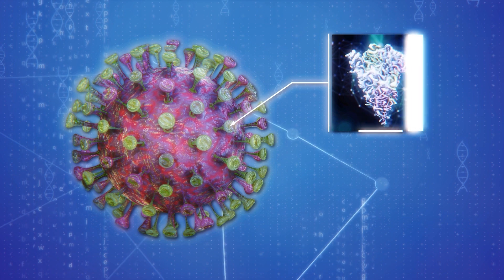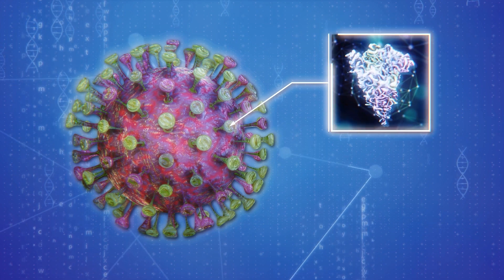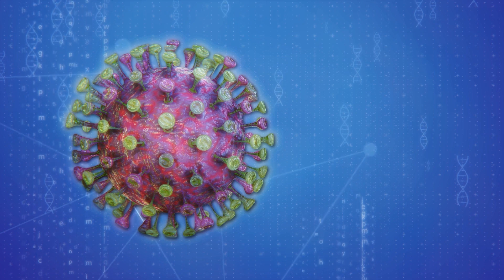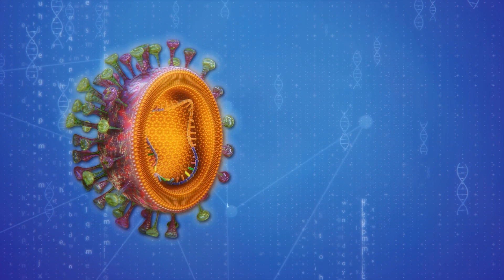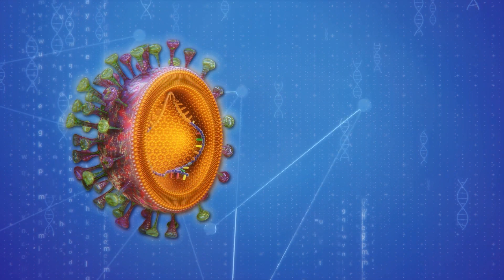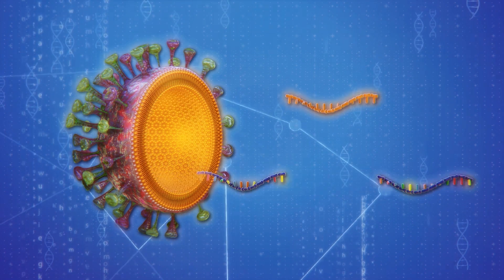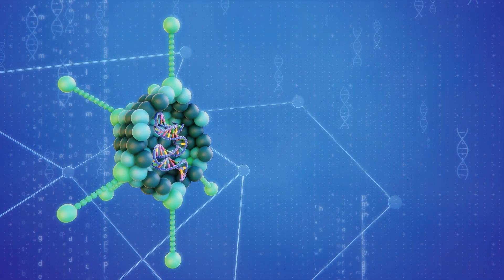The spike protein possesses receptor-binding domains, or RBDs, that the virus uses to pry open receptors before penetrating the cellular membrane. The AstraZeneca-Oxford vaccine carries a gene with the code for the spike protein that the coronavirus uses to enter a human cell.